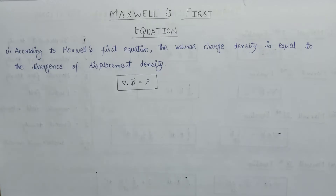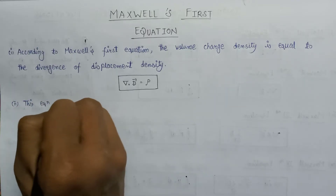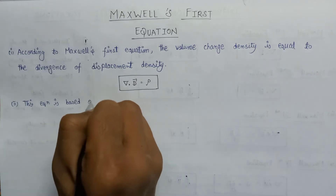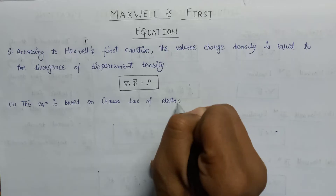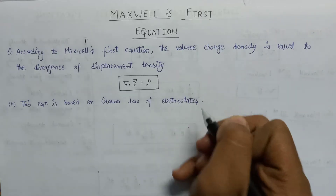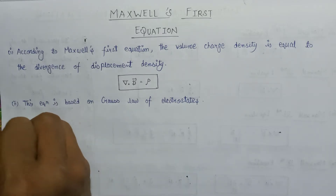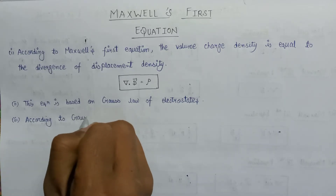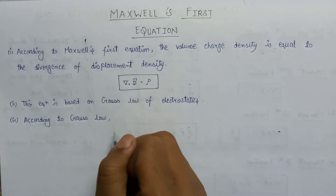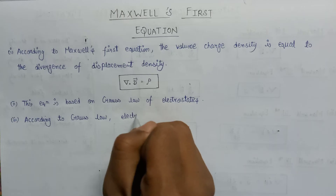This equation is based on Gauss's law of electrostatics. According to Gauss's law of electrostatics, the electric field passing through a closed surface is equal to the net electric charge enclosed by that surface.